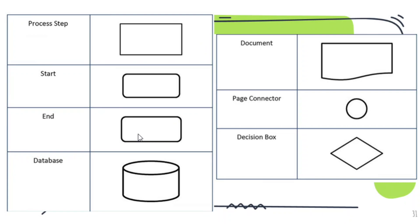These are the tools or shapes used in documenting a business process map. A rectangle represents a process step. An oval or rounded shape represents the start and the end. Other symbols include database, document, page connector, and decision box. You also use arrows. Usually there is a legend — when you see a rectangle, it means this; and so on. You can include something like that in your process map.